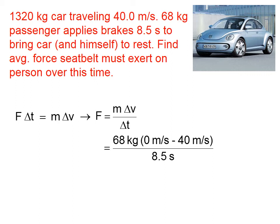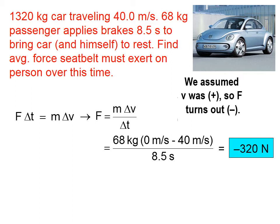Change in velocity, as always, is final velocity minus initial velocity. In this case, final velocity is 0 and initial velocity was 40. Then we divide by the time, and we get negative 320 newtons. The reason that force is negative is because we assumed that the initial velocity was positive.